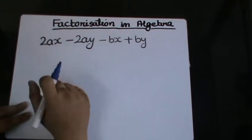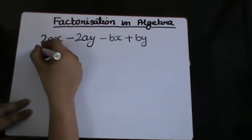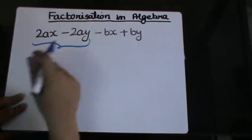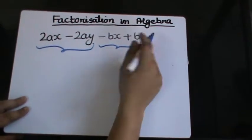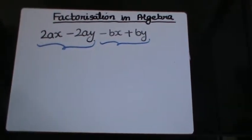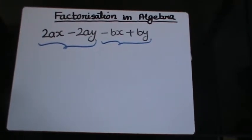I have 2a as common element in both the terms so I can have this as a group. And here I have b as common element in both the terms so I can have that as a group.